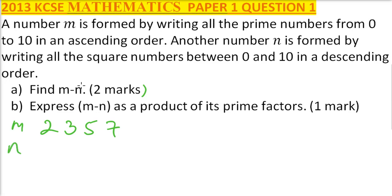n is formed by square numbers, descending. So it means we have descending, we have 9, we have 4, and we have 1. So we have 941.